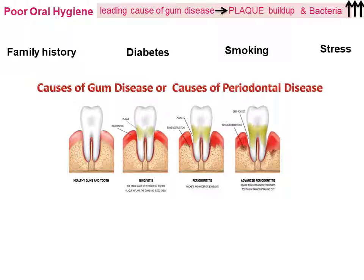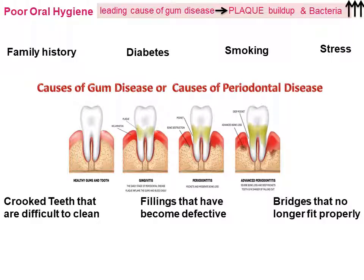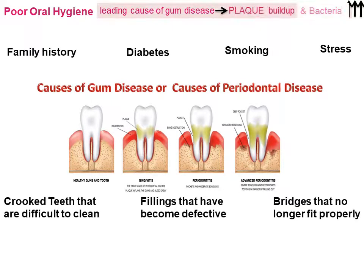Stress is another cause. Crooked teeth that are difficult to clean, fillings that have become defective, and bridges that no longer fit properly — all three, coupled with poor oral hygiene, result in plaque buildup and hence increased bacteria and gum diseases.